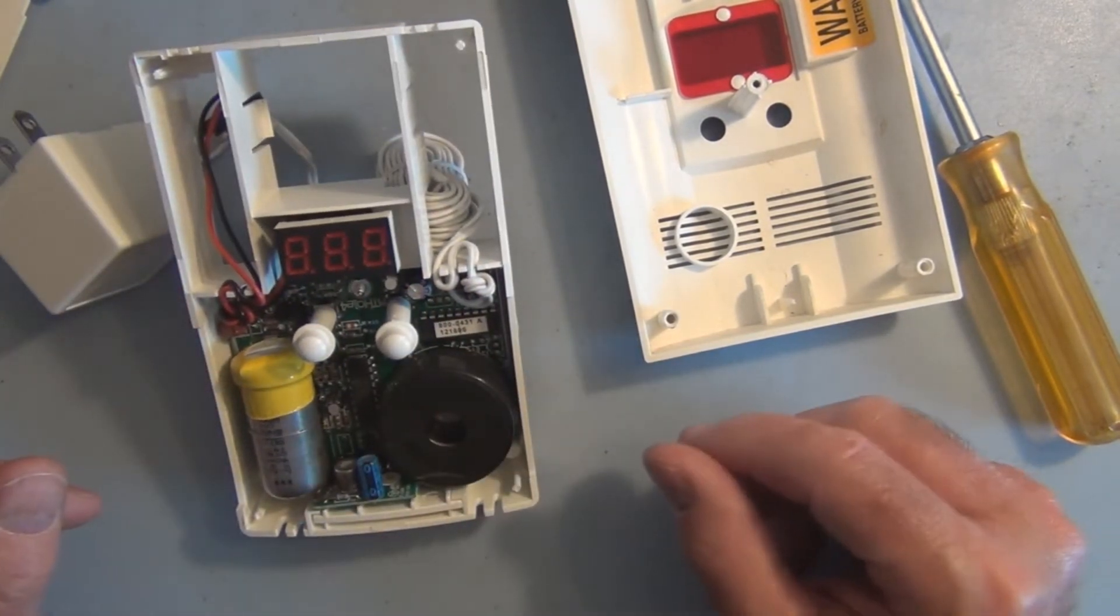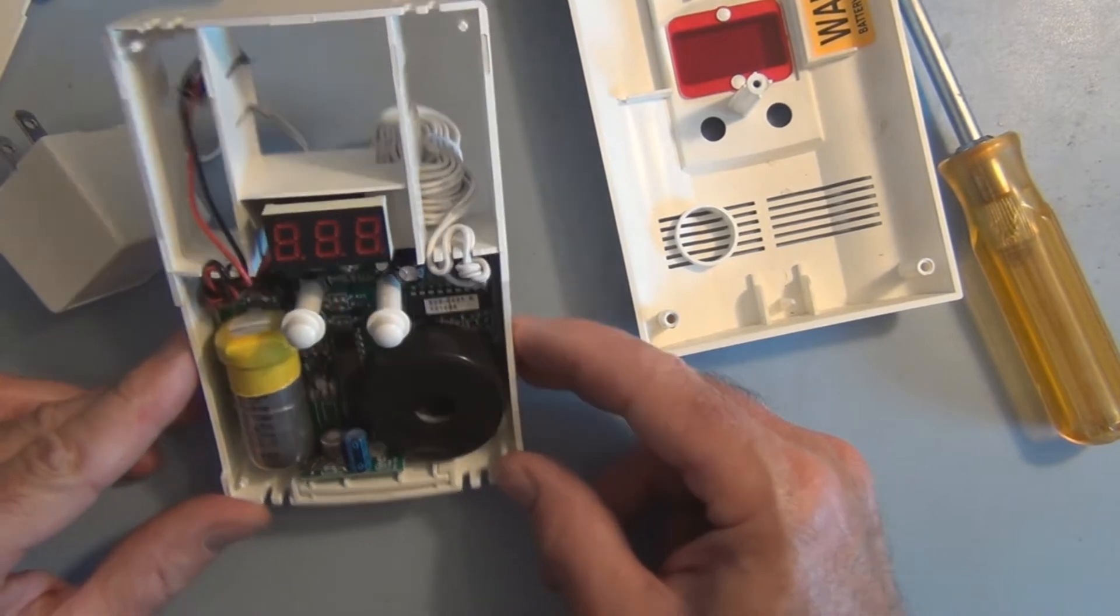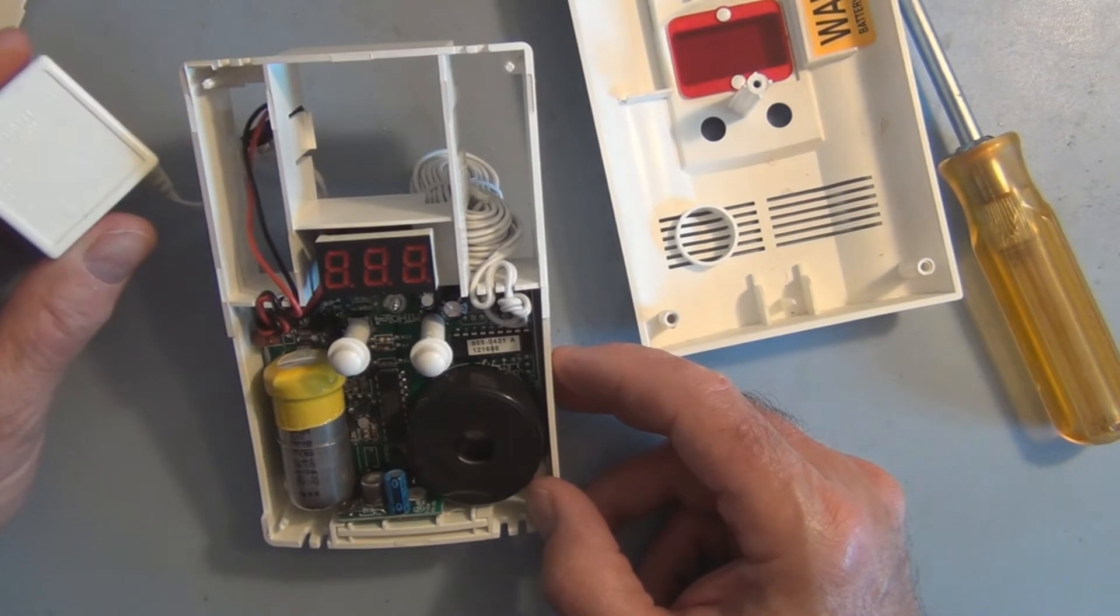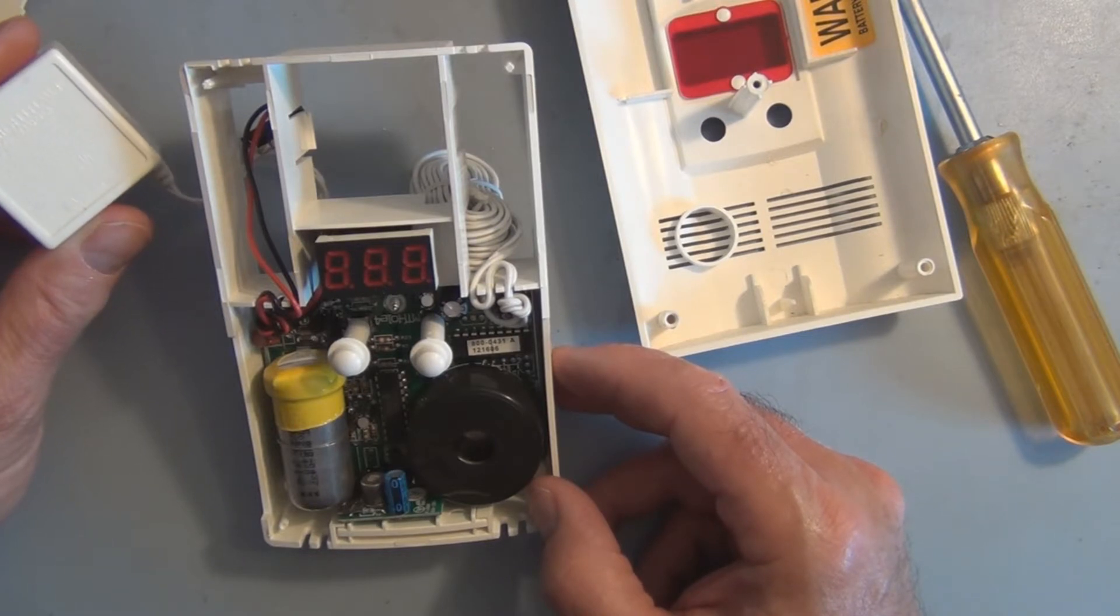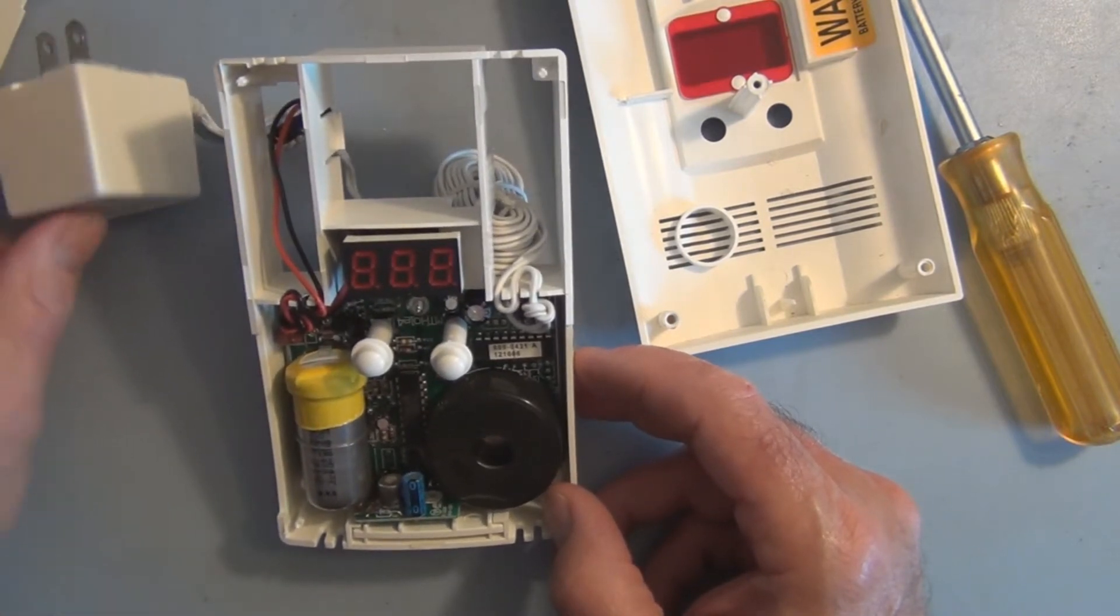Obviously somehow this kept track of time, was able to keep track of seven years going by. Okay, I think this just is a transformer. Let's see, output. Yeah, it is just a transformer. It's a nine volt AC, 250 milliamps output. So this could still be used in a project.